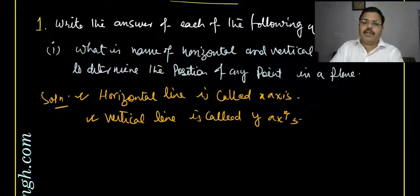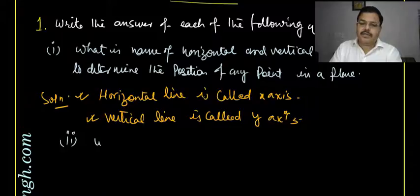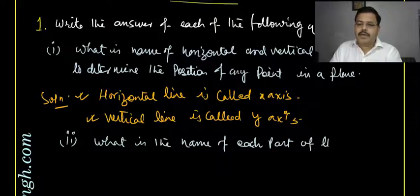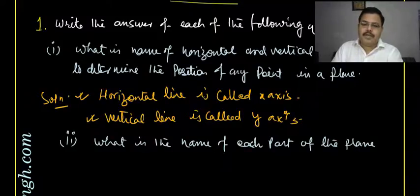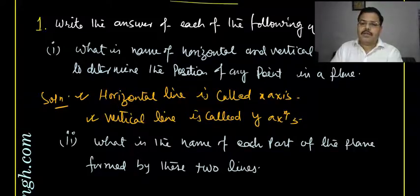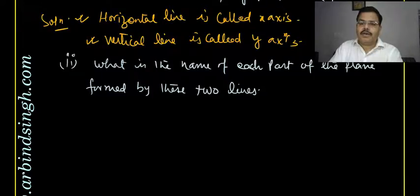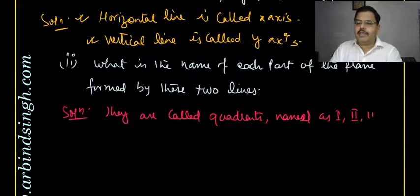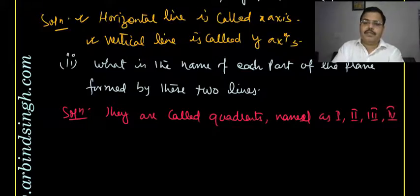The second question asks: what is the name of each part of the plane formed by these two lines? The solution is: they are called quadrants, named as first, second, third, and fourth. This is the solution.